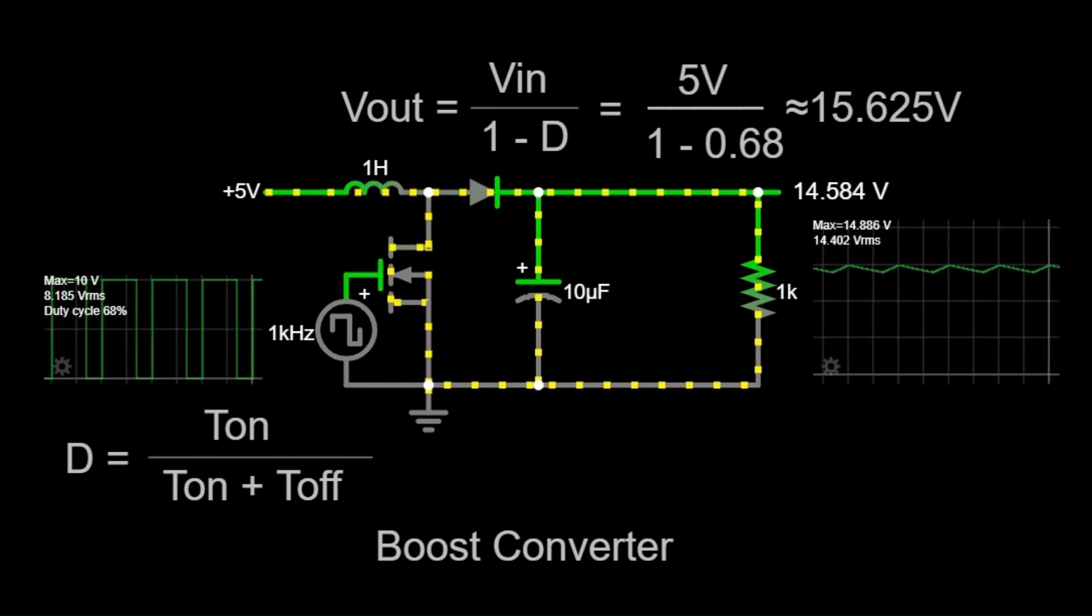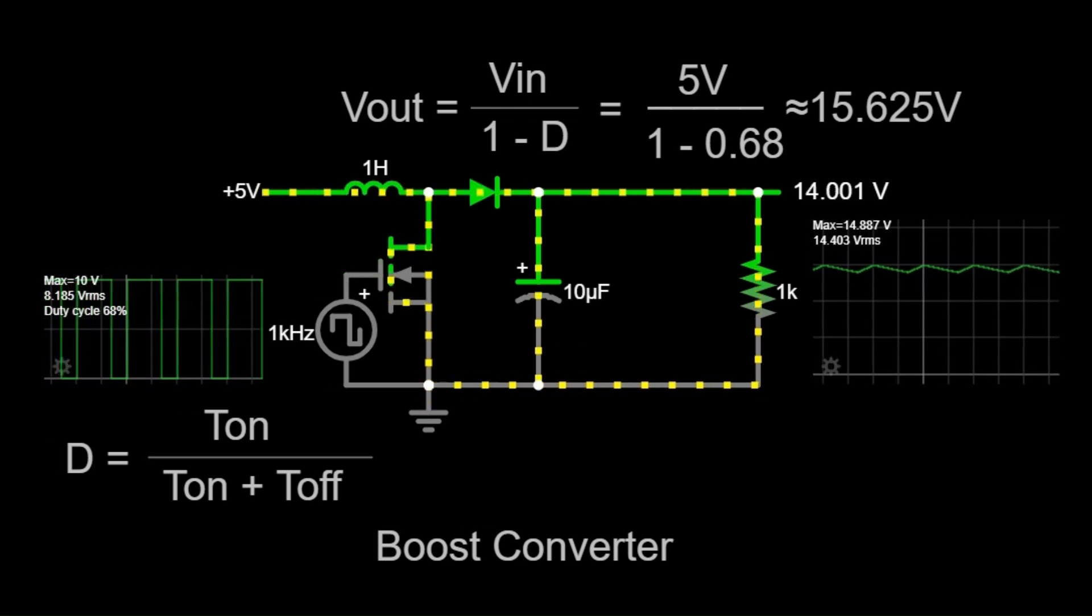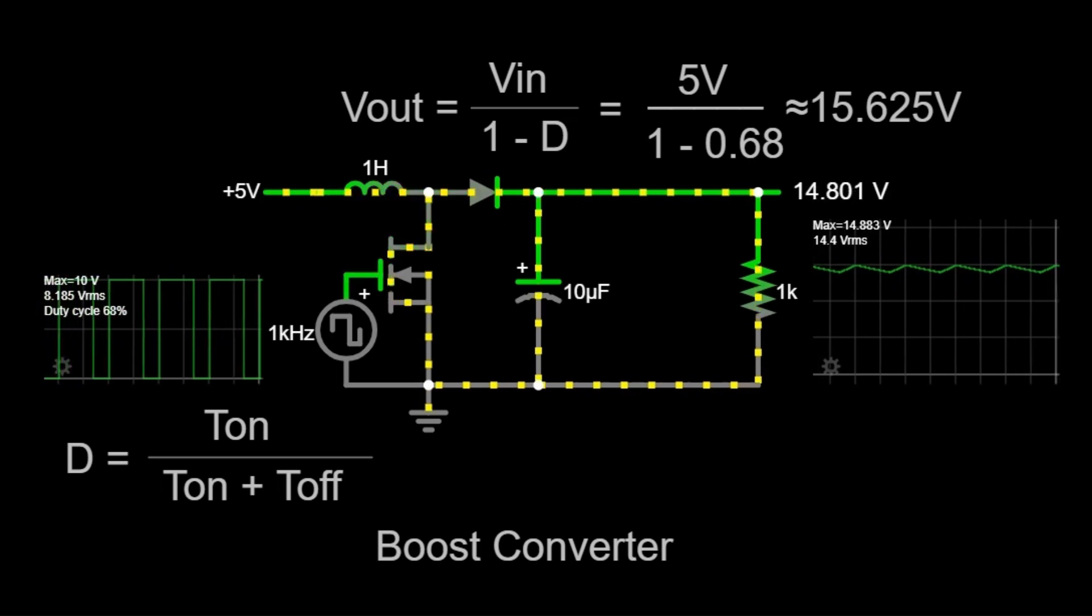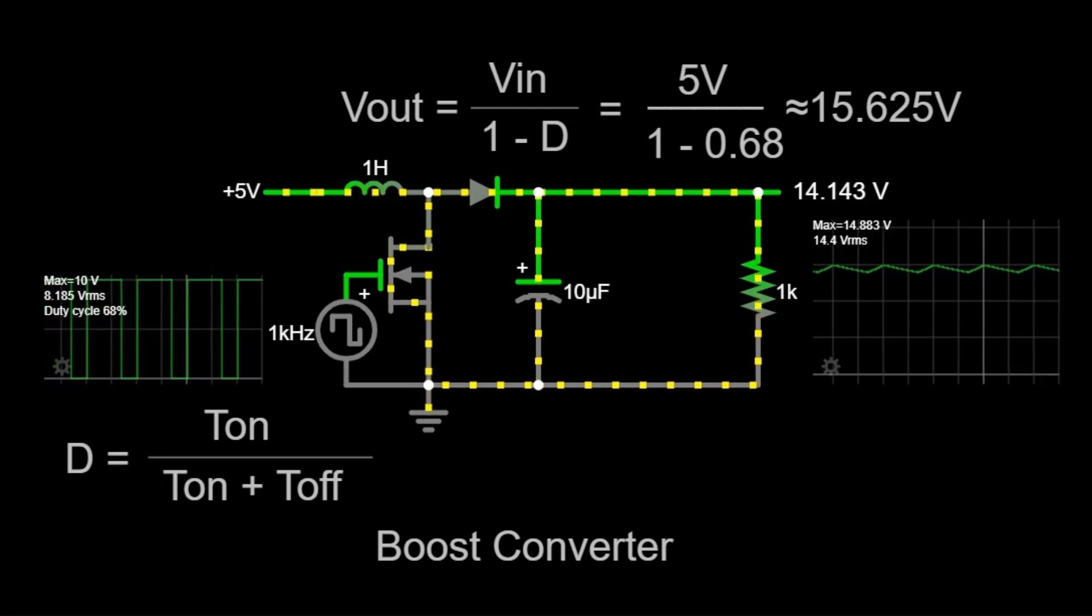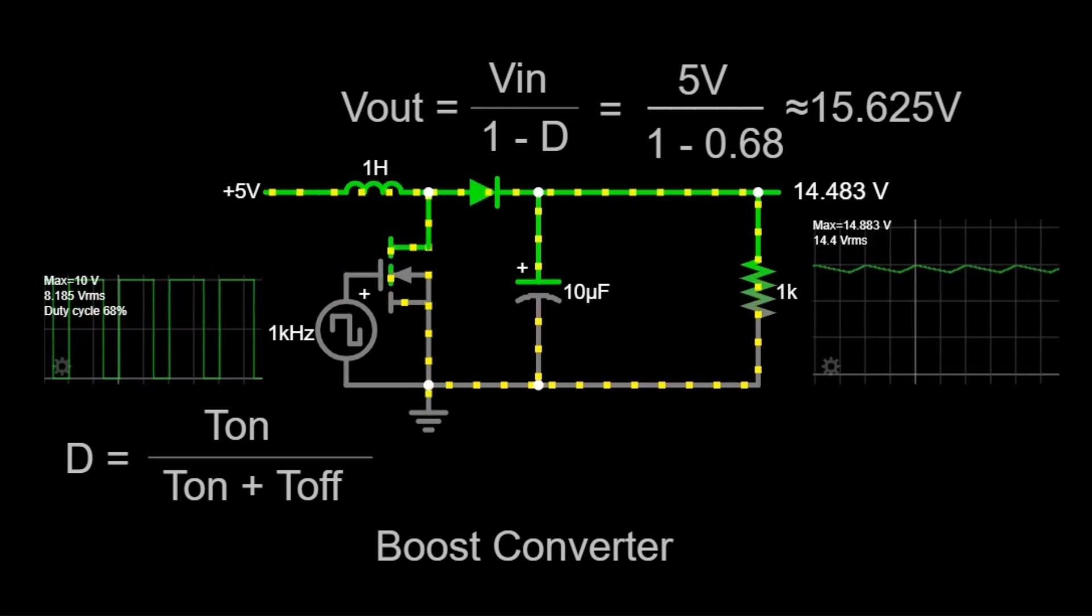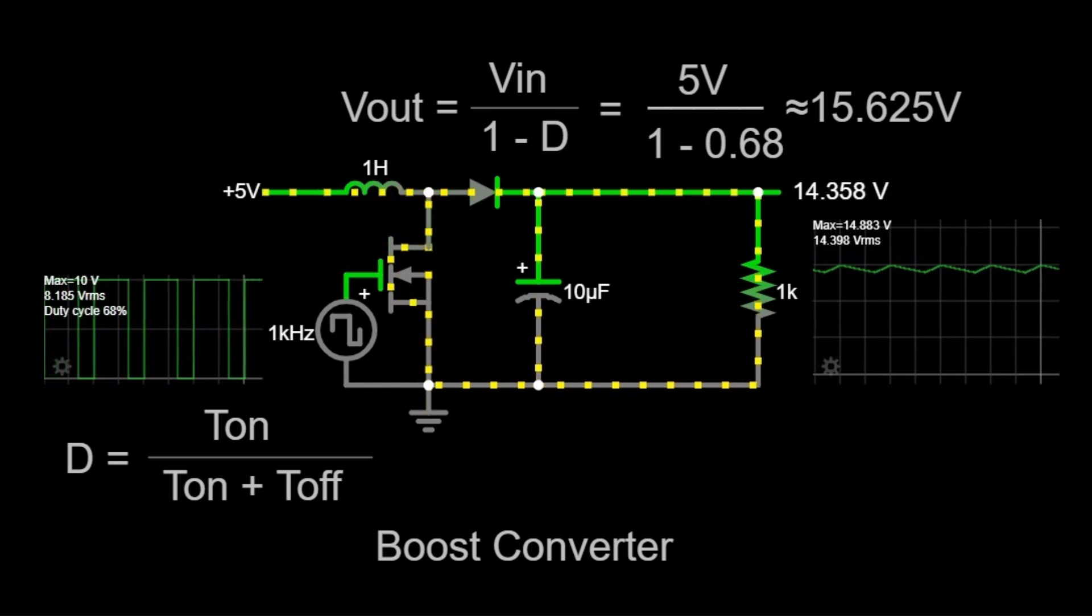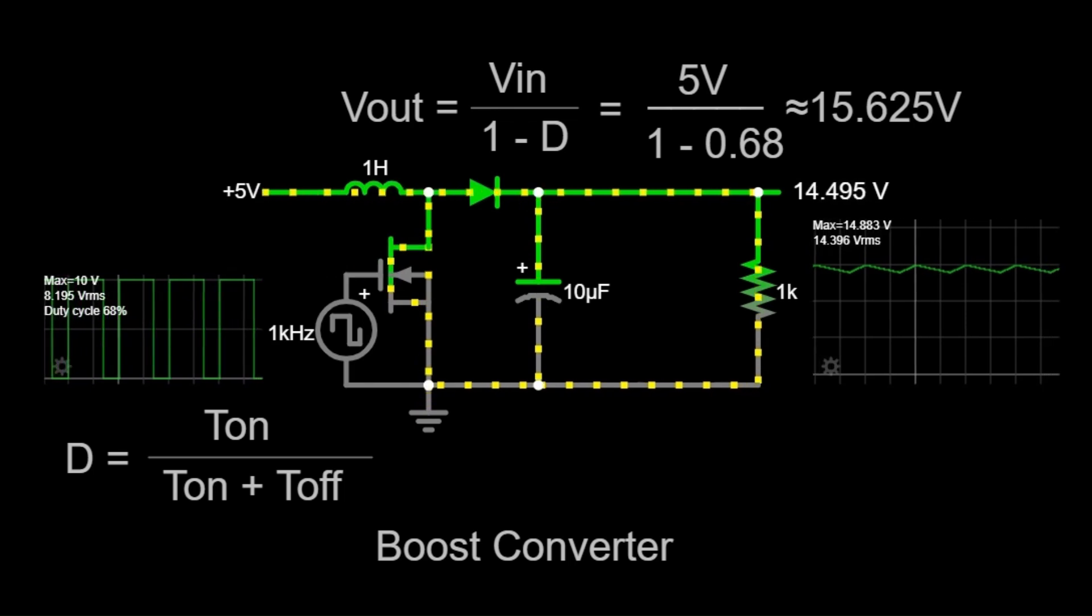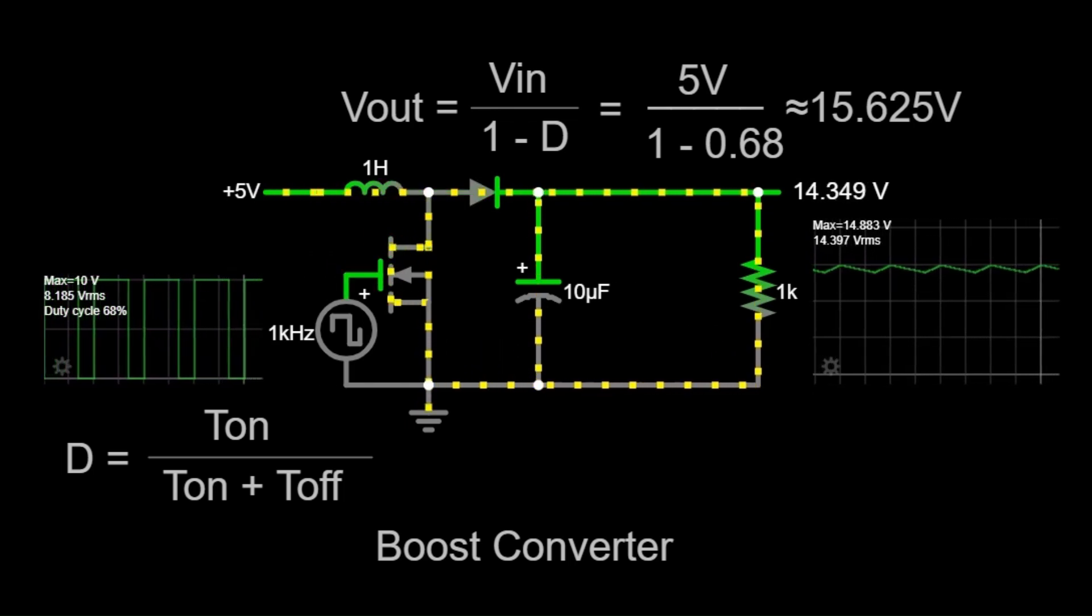Next, we have the switch, which is often a transistor. In this diagram, the switch is controlled by a pulse width modulation (PWM) signal operating at a frequency of 1 kHz. This means the switch opens and closes 1,000 times per second. The PWM signal's duty cycle determines how long the switch stays closed (ton) versus how long it stays open (toff). The duty cycle is a critical factor in determining the output voltage of the boost converter.